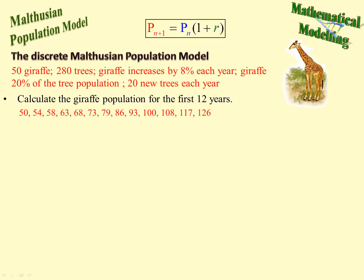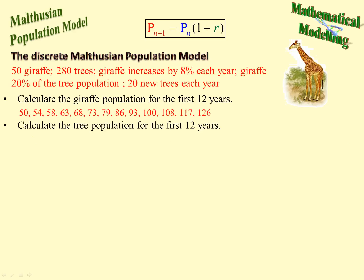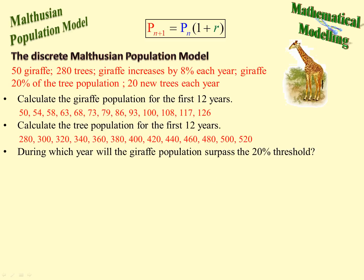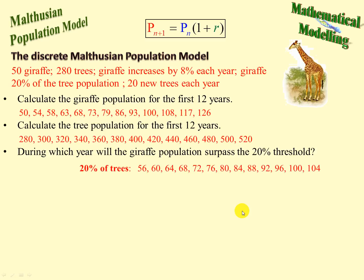We round everything downwards — we cannot have 3.8 of a giraffe. The tree population starts at 280 and we add 20 each year. Now we need to know when the giraffe population will surpass 20% of the tree population, so let's list 20% of the tree values. This here is 20% of those numbers, and we'll list the giraffes once again alongside.